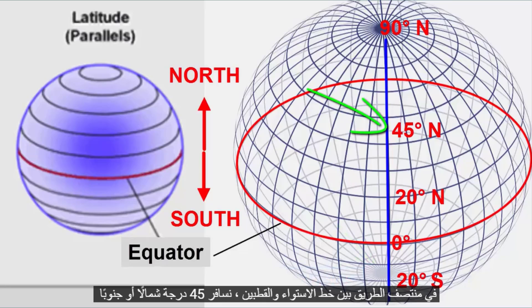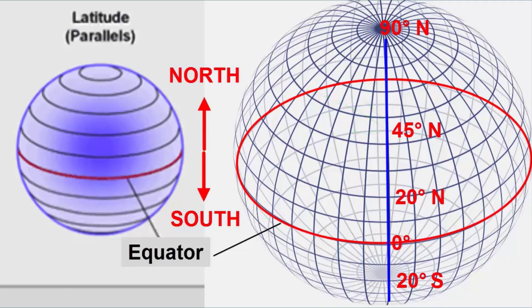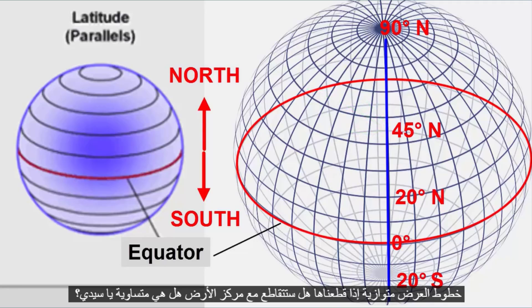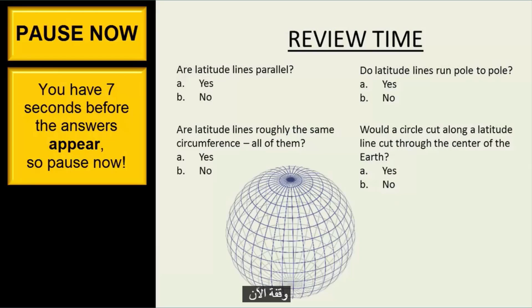Halfway between the equator and the poles, we travel 45 degrees north or south. Are latitude lines parallel? If we cut them, will they intersect the center of the earth? Are they equal circumferences? Pause and consider these questions.